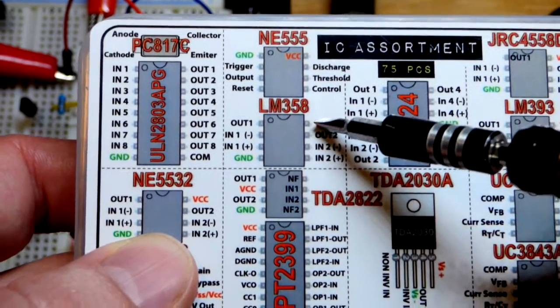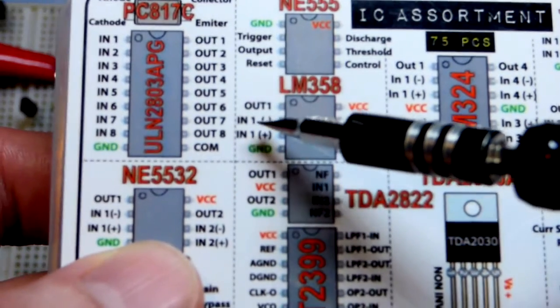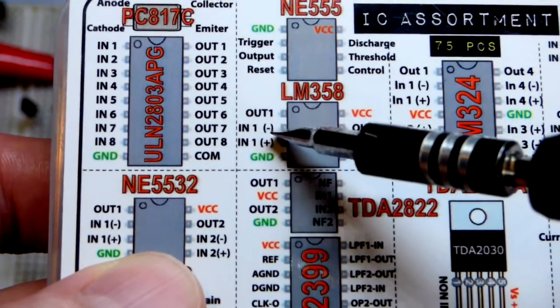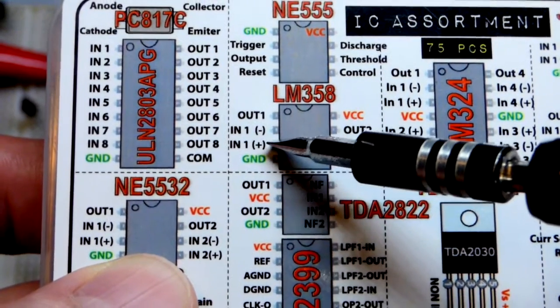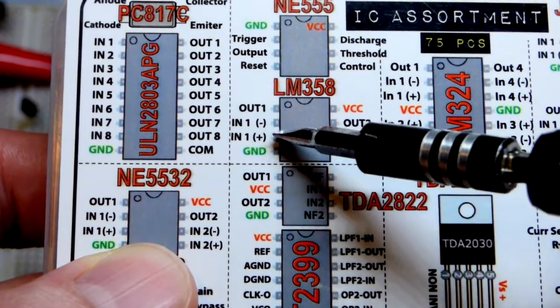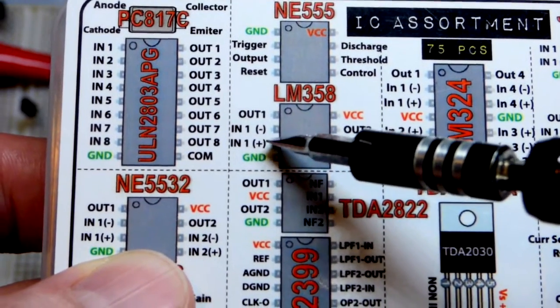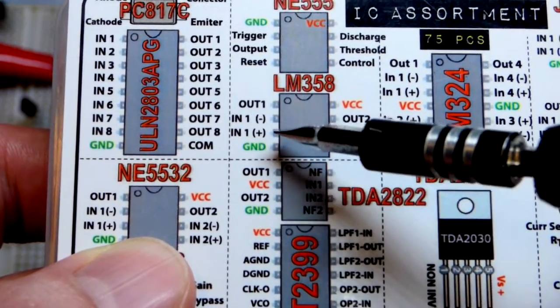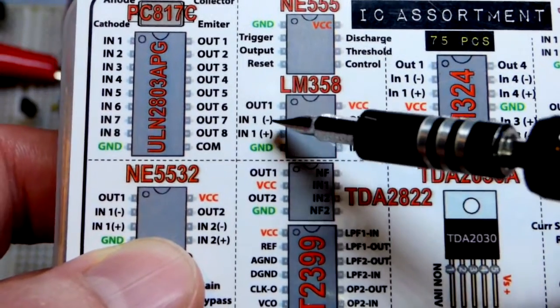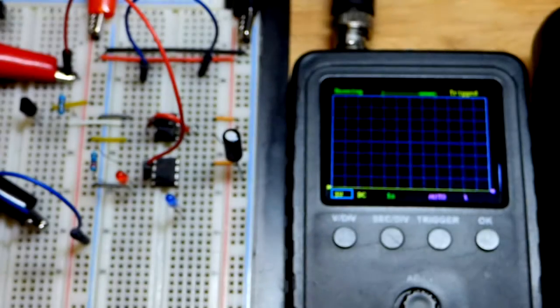So in any case, we've got the LM358 there. We have to power it, positive supply to pin eight, negative supply to ground. And you can see here that we have the output on top, inverting input below it, and the non-inverting input below that. So that's where they were on the schematic, inverting above non-inverting. Sometimes on the schematic, they'll put the inverting below the non-inverting. So you got to pay close attention on the physical component. The inverting here is always above the non-inverting.